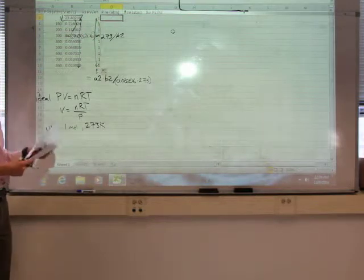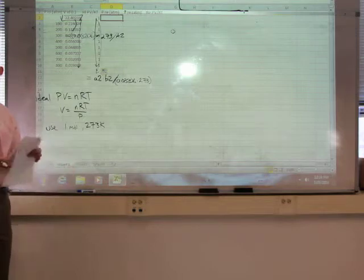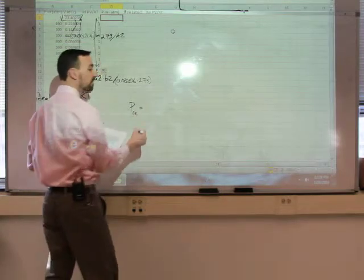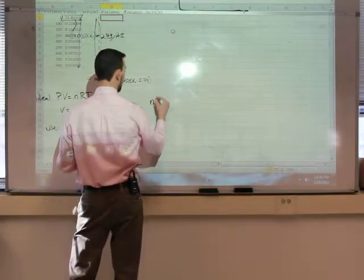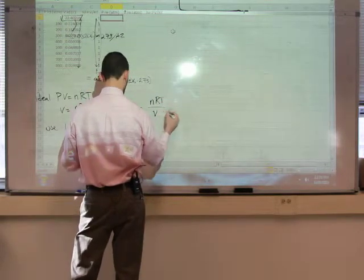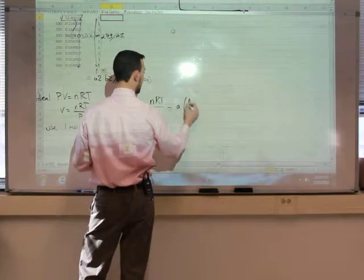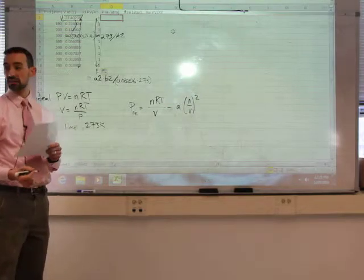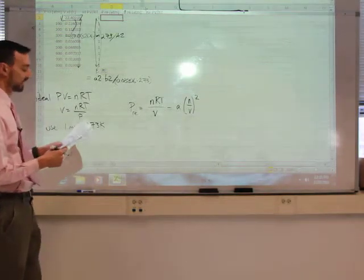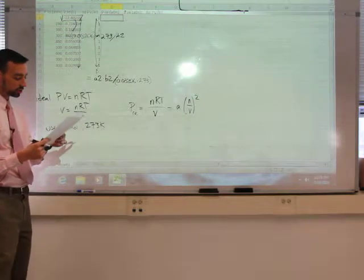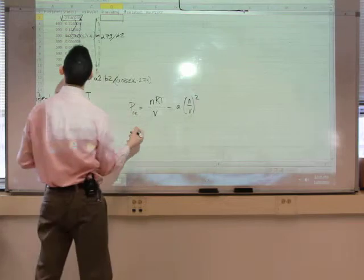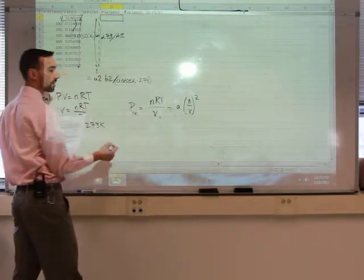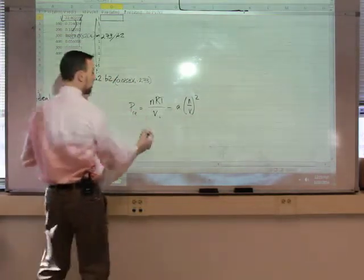Okay? Now, that's the ideal behavior. So now we are going to shift over to real behavior. So the real pressure from the van der Waals equation that we have in our report is nRT over V minus n squared A over V squared. So we need to figure out how to type this equation in to Excel. And what we are going to do here is we can assume, by the way, ideal behavior for the volume when we are doing this.